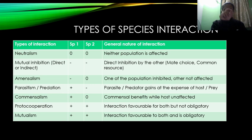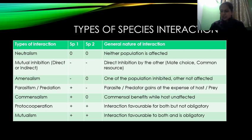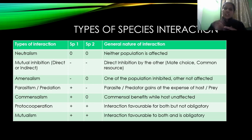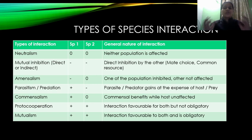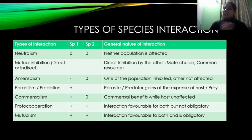तो ये जो मैंने column बनाया है — SP1 and SP2 — जिसमें 0, negative, या positive लिखा है, इन्हीं signs के basis पे आपको questions आते हैं। जब हम questions solve करेंगे तो आपको इसके basis पे question पता चलेगा। अब हर एक interaction को समझते हैं with proper examples ताकि exam में अगर example के basis पे बताना पड़े कि ये किस type का interaction है, then you will be at ease to answer that question।